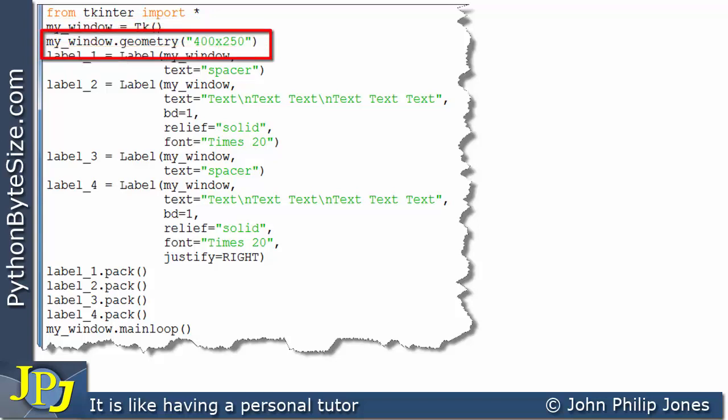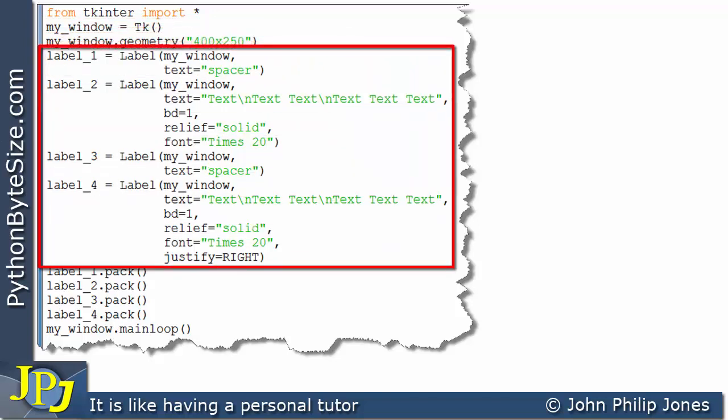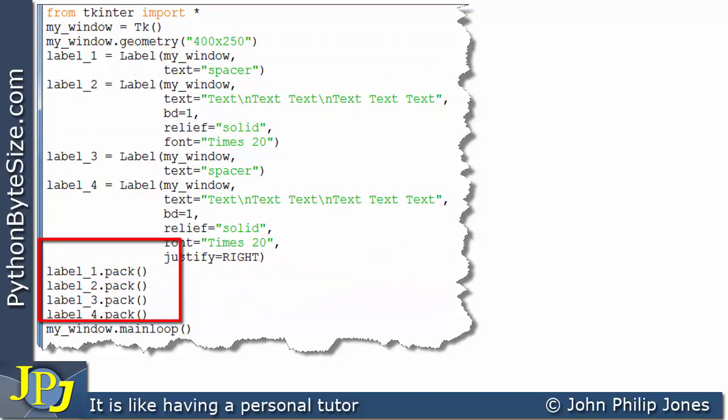It sets the size of the window, and then you can see there are four labels, and those four labels are packed. We can see the main loop that you would see in all of these types of programs on graphical user interfaces using TKinter.